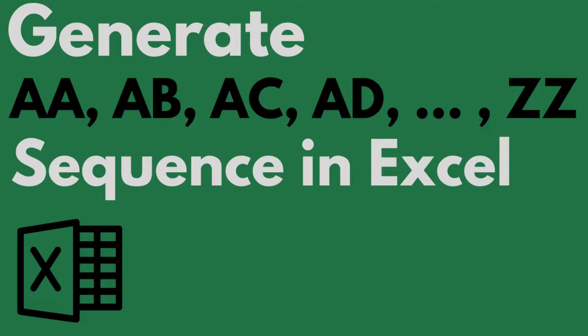Are you trying to create an ongoing AA, AB, AC, and so on sequence in Excel, but you're struggling? If yes, you're in the right place. In this video, I'm going to show you exactly how to create this sequence in Excel using a formula.